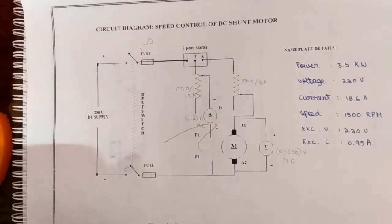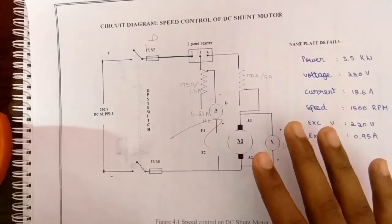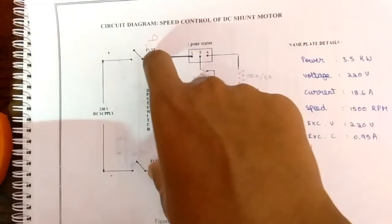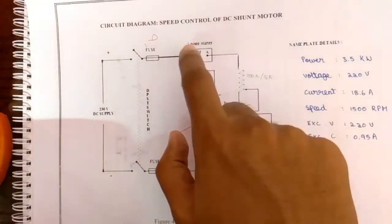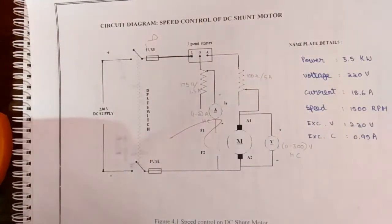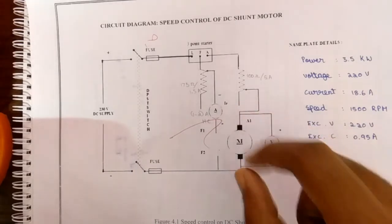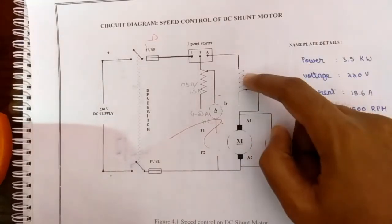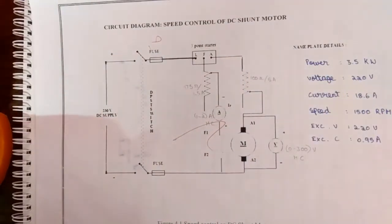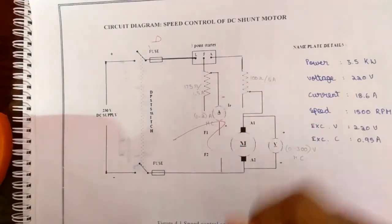So the procedure for the field control method is: first the DPST switch is closed and the motor is started using the 3-point starter. The voltmeter connected parallel to the armature should be kept at constant voltage by not varying the armature rheostat. The field rheostat is varied and corresponding readings are noted down in tabular column.